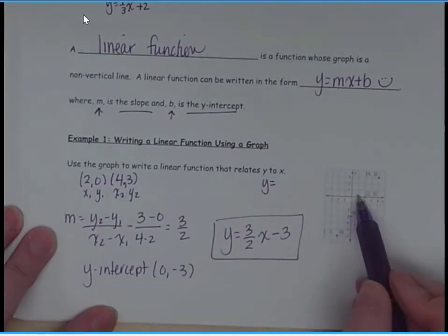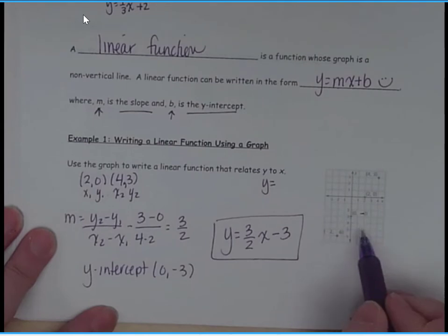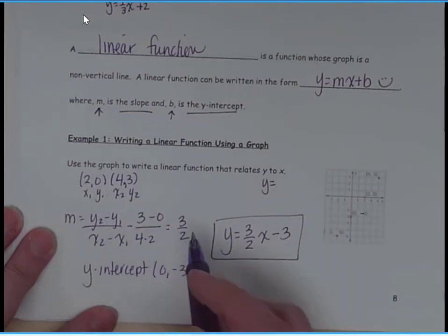What I could have also done is found my y-intercept here, negative 3, and then found the slope, up 1, 2, 3, over 2. There's my 3 halves. So you can use it by doing rise over run or find your slope.